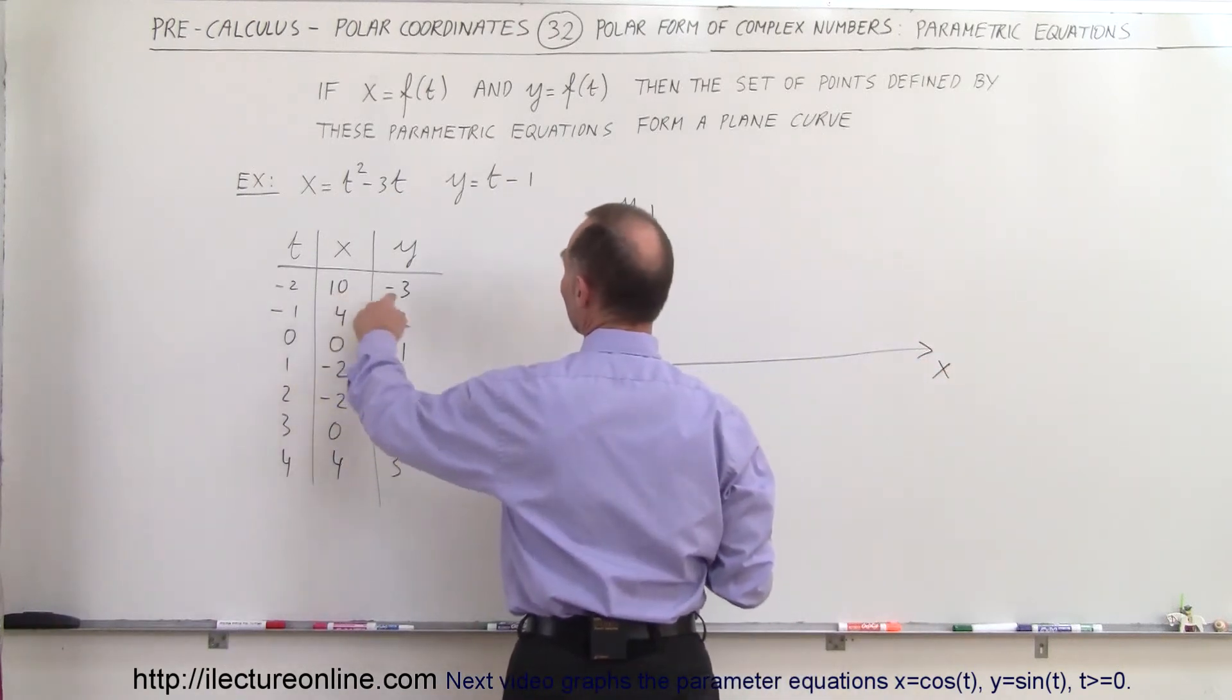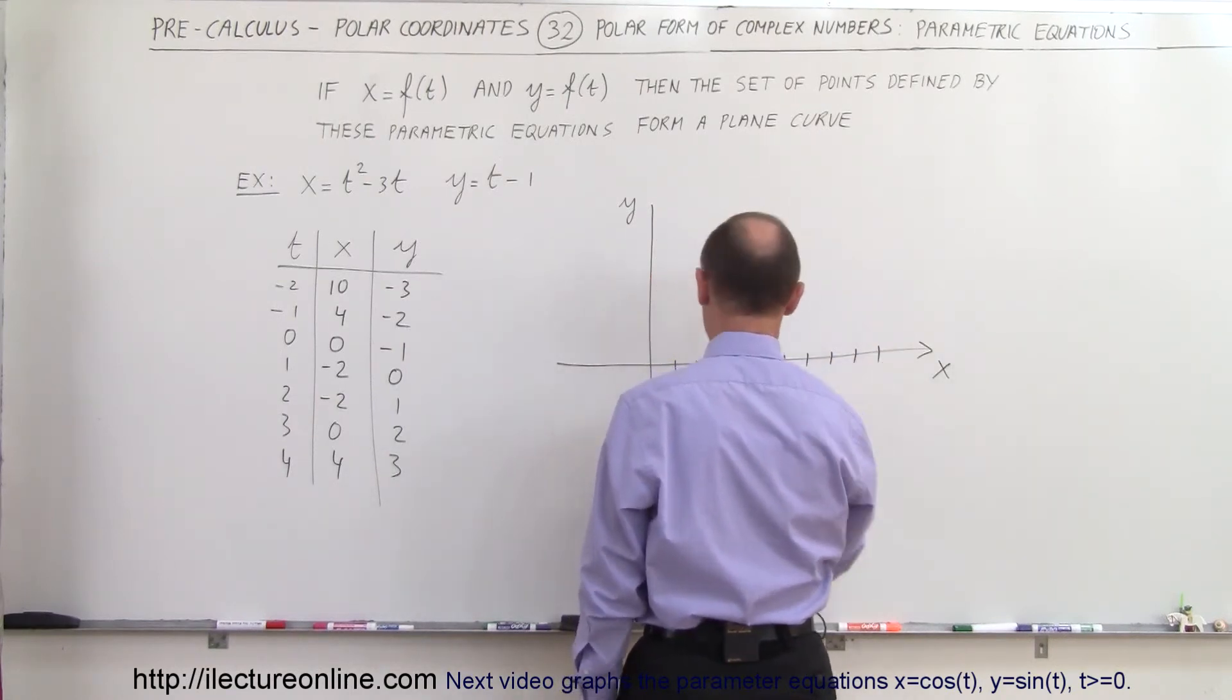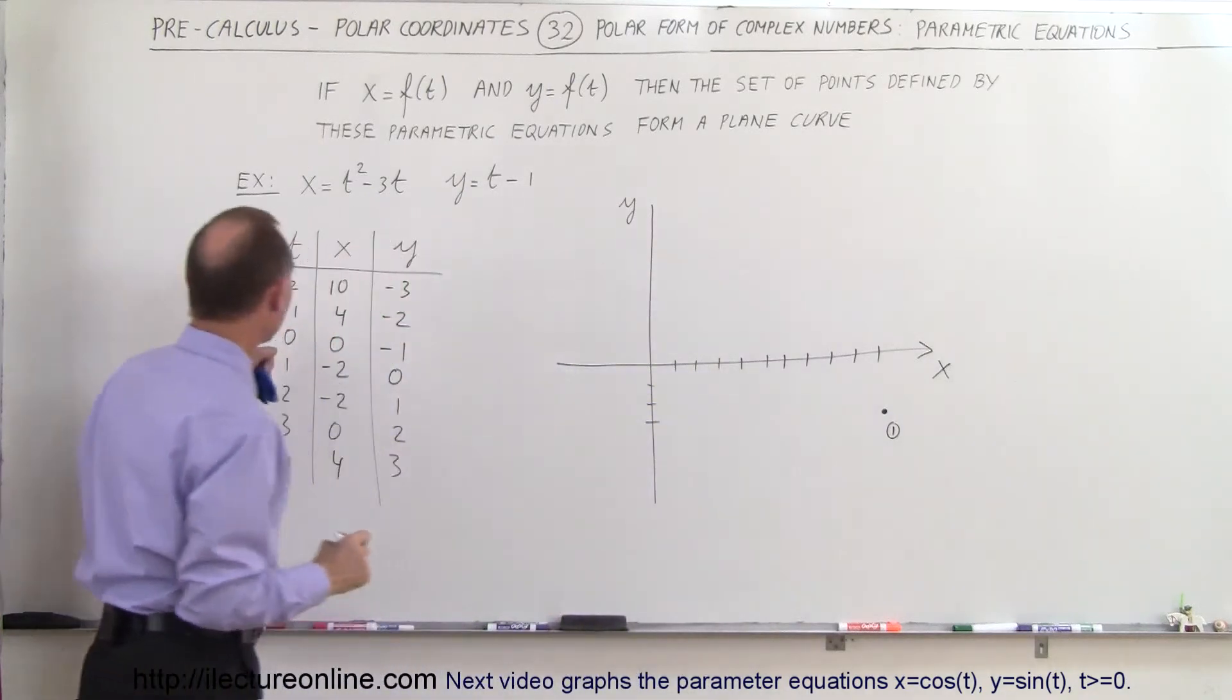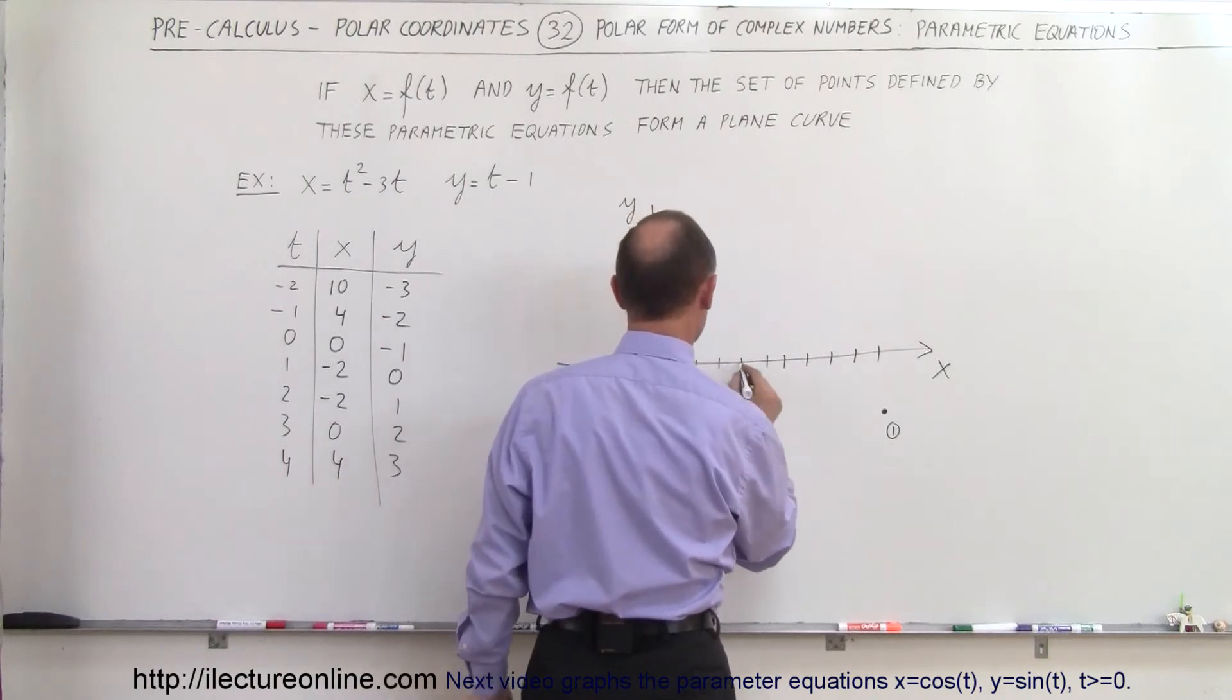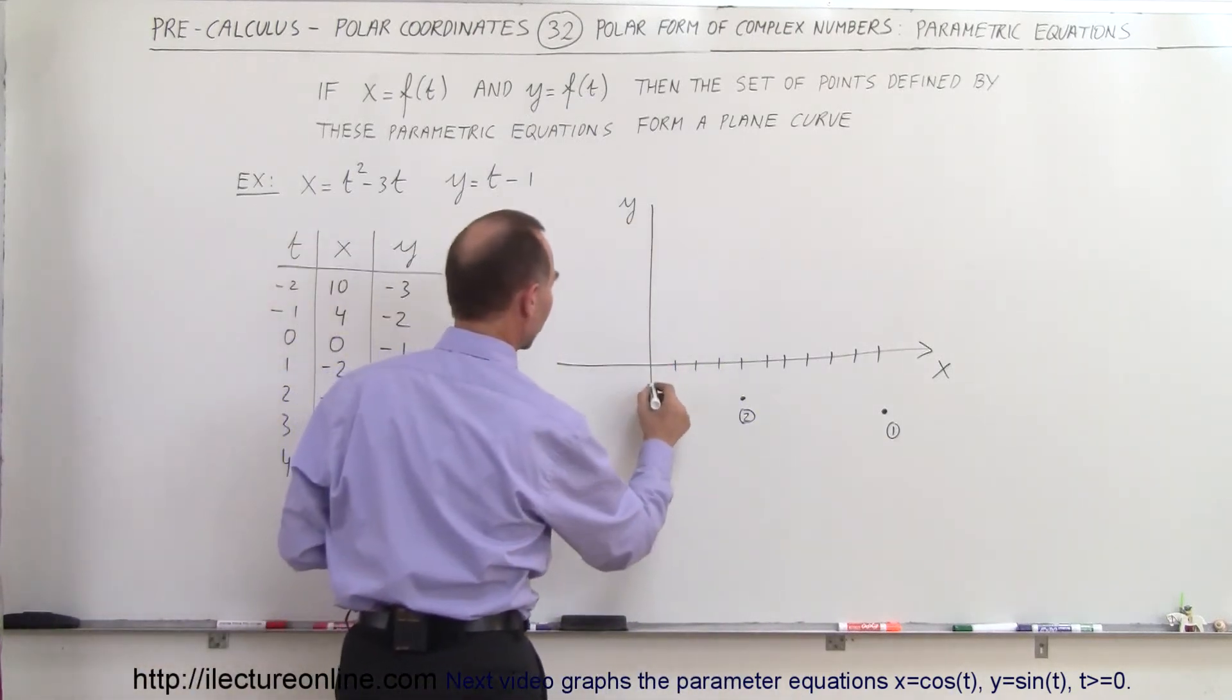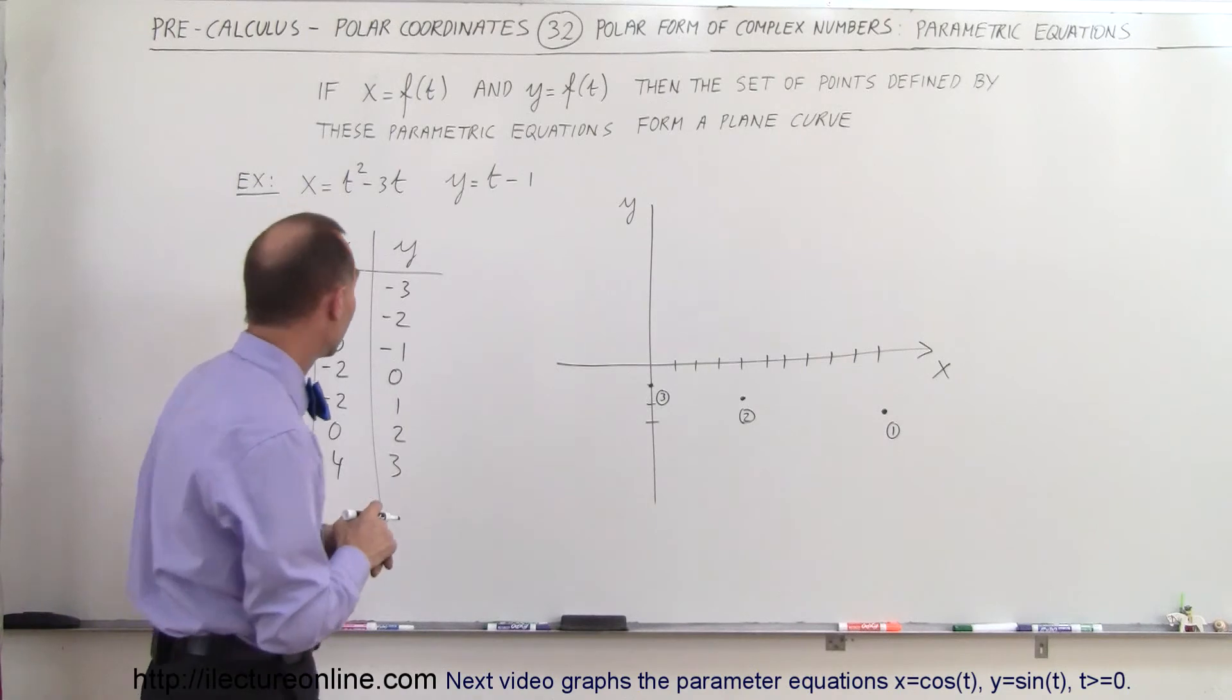And let's find the point (10, -3). That would be the first point right there, point number 1. Then the next point would be at (4, -2). That would be right here, point number 2. Next point would be at (0, -1). That would be point number 3. And I'll show you why I numbered them, because later on I will see the reason why we did so.